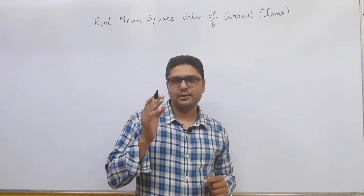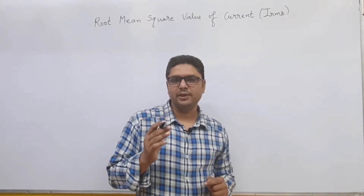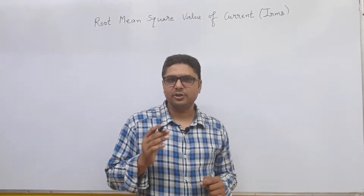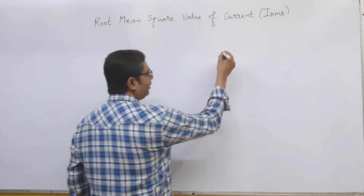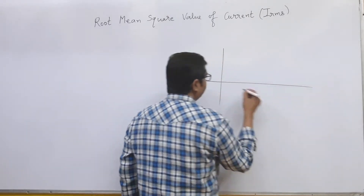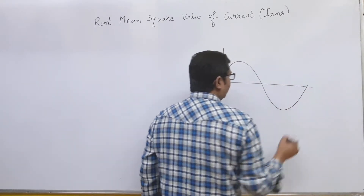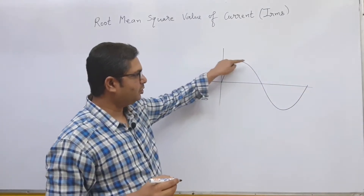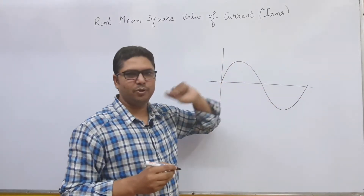Alternating current is the current whose magnitude changes continuously and direction changes periodically. I am drawing the diagram for alternating current. Here you are seeing that the magnitude is changing continuously and direction is changing periodically.